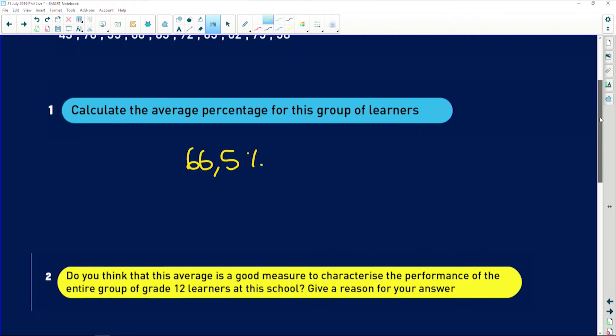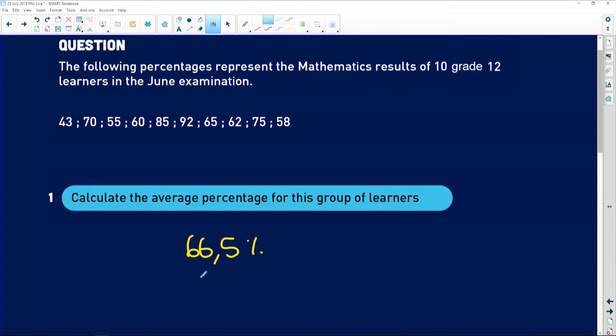Okay, so if we look at this, we've got 66.5 percent as the average. But if you look, we've got a range from 43 percent all the way to 92. So if I say on average, the matrics did 66.5 percent, that really doesn't account for the fact that some learners did really badly and might need help. And other learners did really well and are not being given credit for that example.